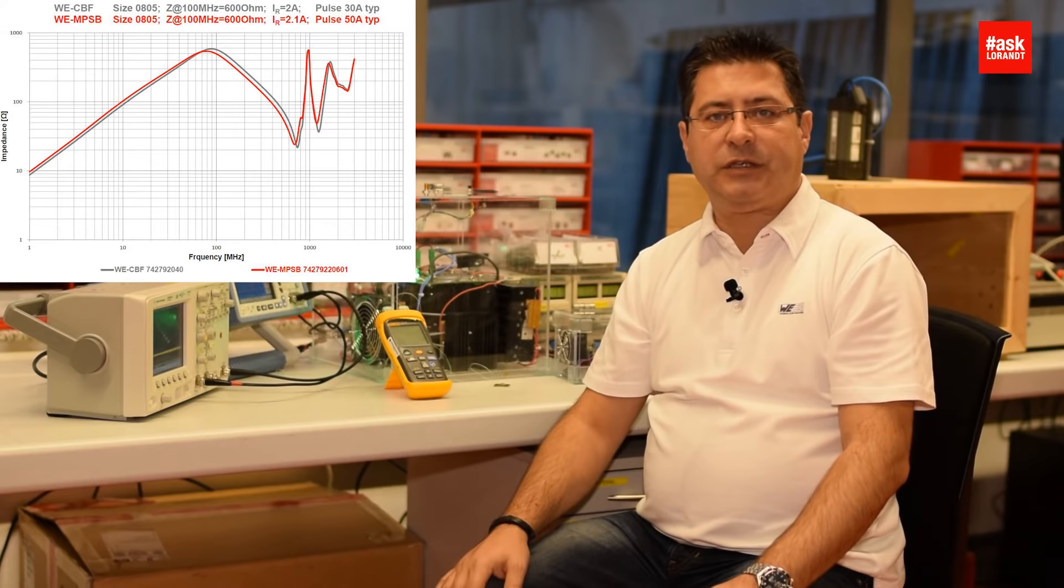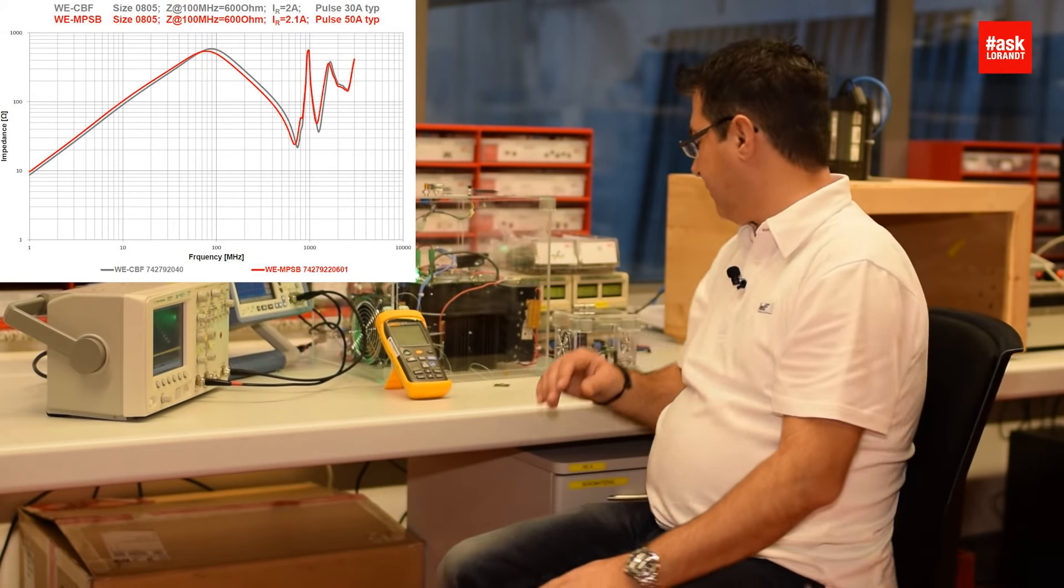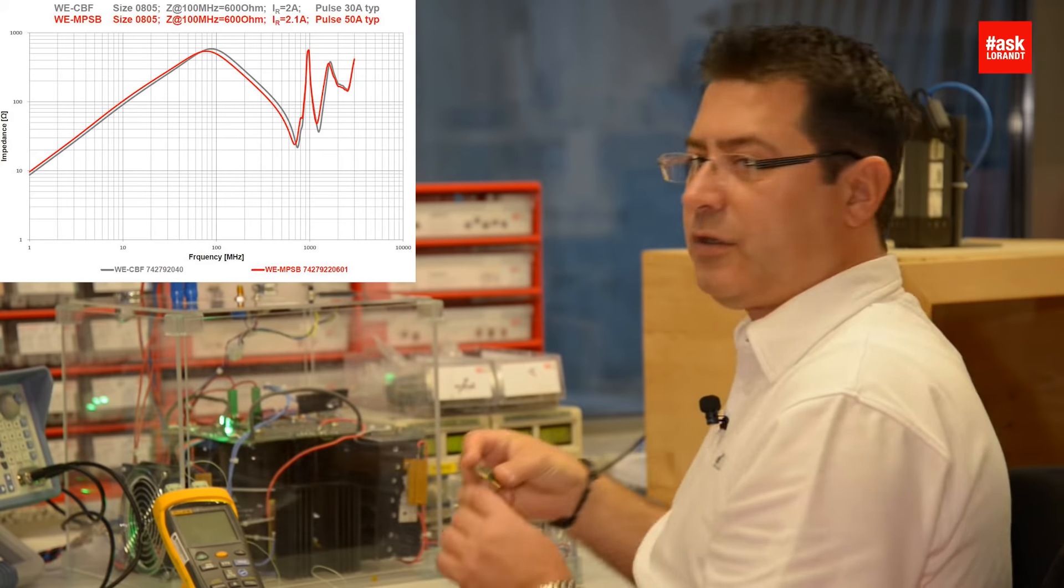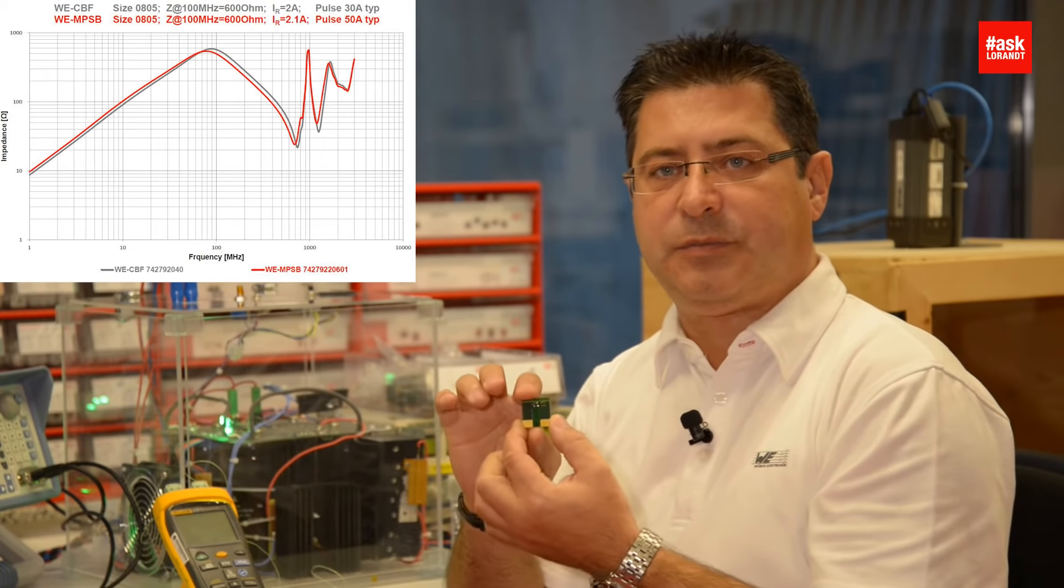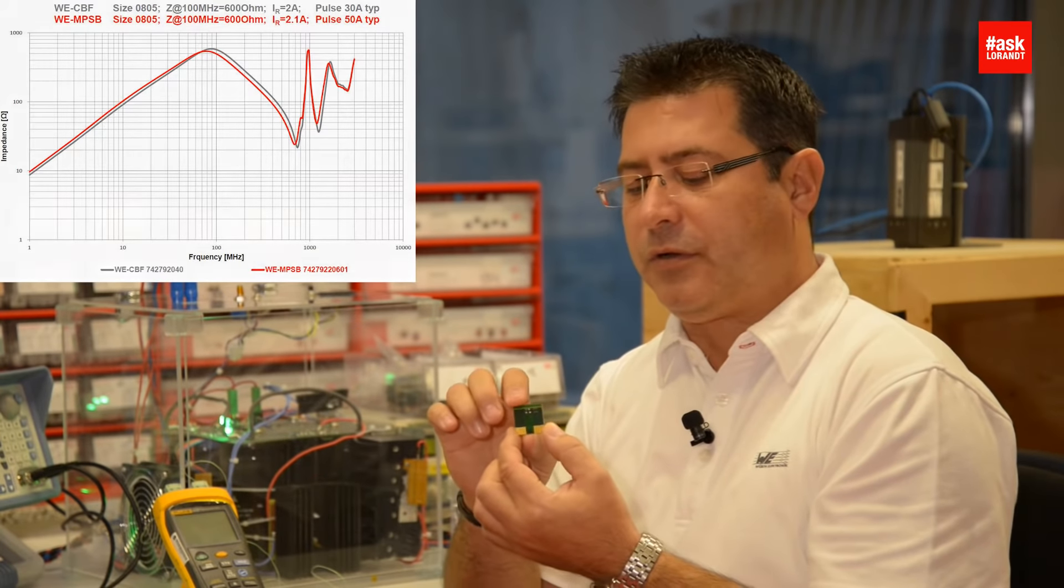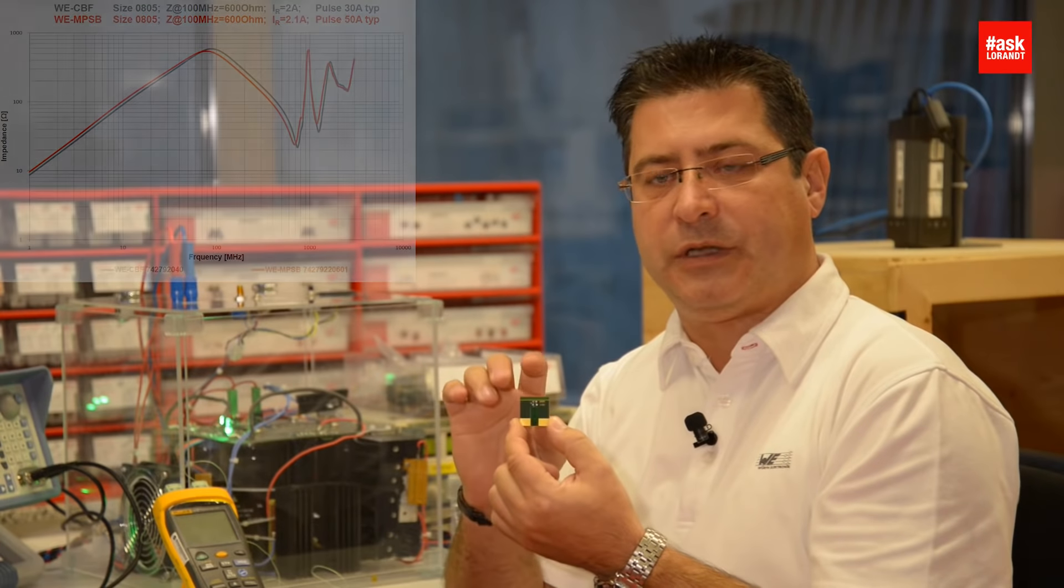At the end of the impedance curve, you see some oscillation. It is because we will measure this completely including this PCB, so this oscillation comes from the PCB. Don't consider that.